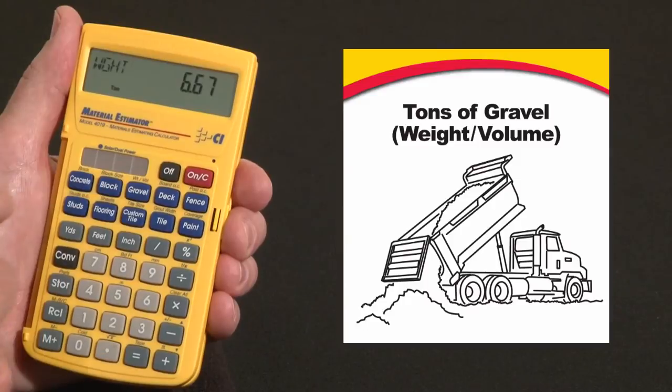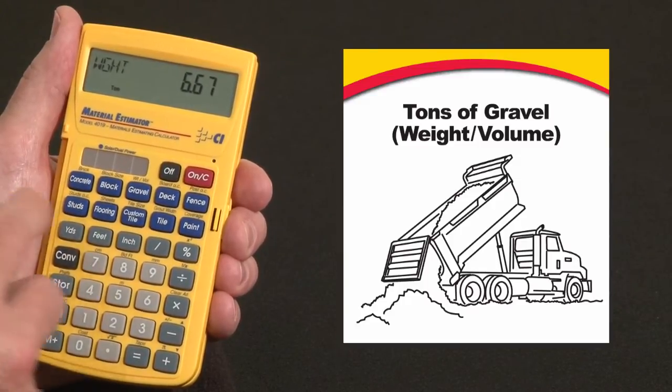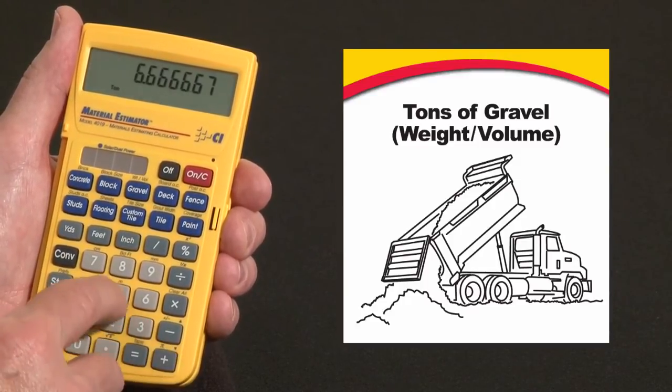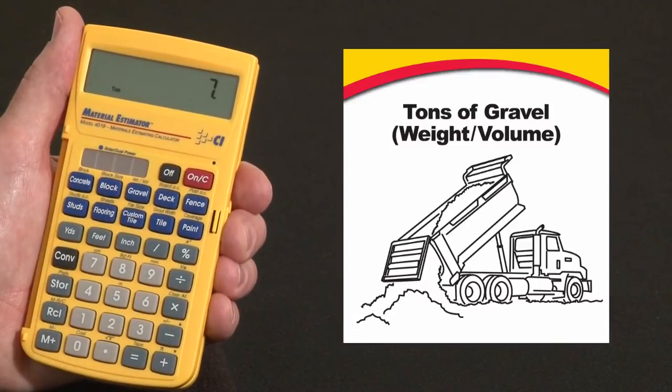All I do is hit the gravel key and it tells me that's going to be about 6.67 tons. Maybe I want to round it up by 5% for waste. Brings us up to 7 full tons for that.